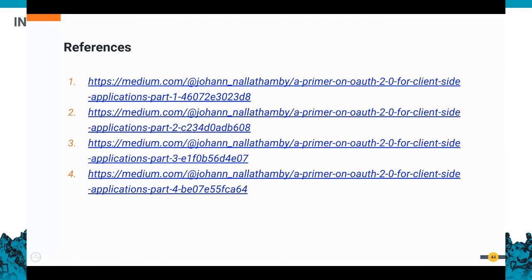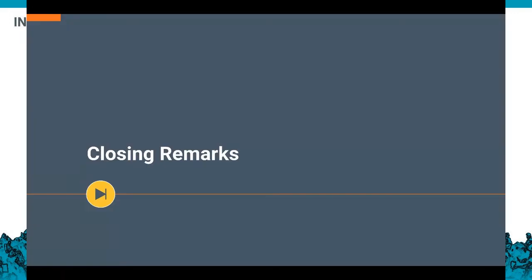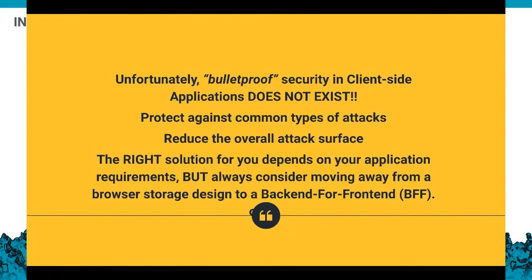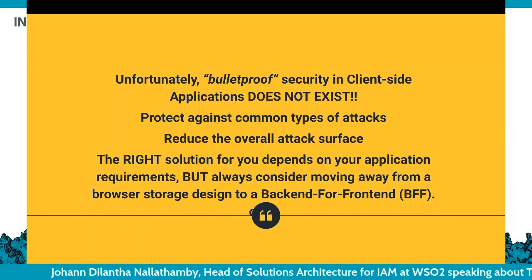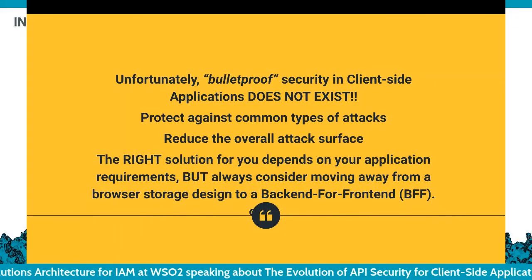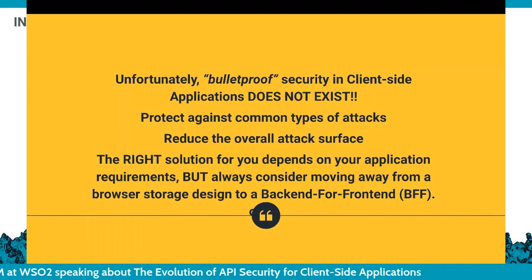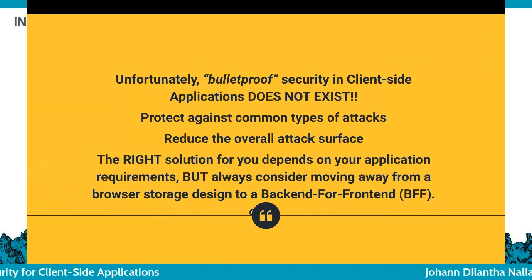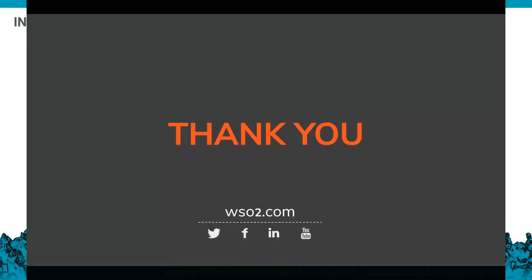These are some references I can point you to — some articles discussing even more patterns in detail. Closing remarks: unfortunately, when it comes to client-side application security, there is no bulletproof solution. You need to mitigate the common types of attacks and reduce the overall attack surface. The right solution depends on how critical and sensitive your business application is. Always try to move to a backend-for-frontend kind of pattern — try to move your tokens towards the backend, which is probably the best thing to do. Thank you very much.